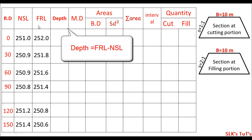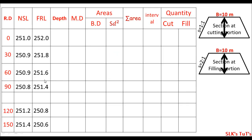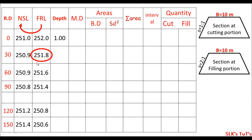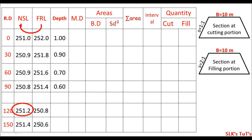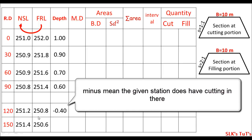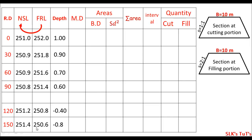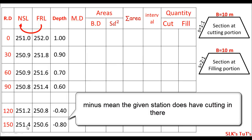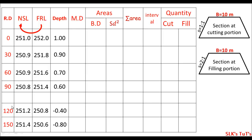The first thing I need is the depth at each RDS. The depth can be obtained by subtracting the formation level from the natural surface level. So: 102.0 minus 101.0 equals 1.0; 101.8 minus 100.9 equals 0.90; 101.6 minus 100.9 equals 0.7; and 100.8 minus 101.2 equals minus 0.4. This negative value means at this section we have cutting, while the stations above are in filling. And 100.6 minus 101.4 equals minus 0.8, so these two stations are in cutting.